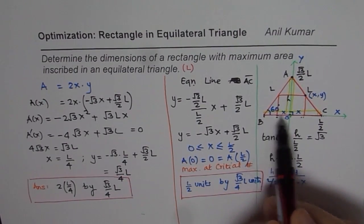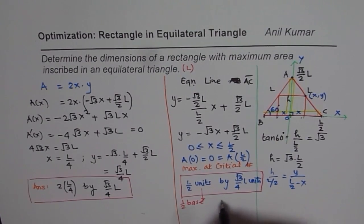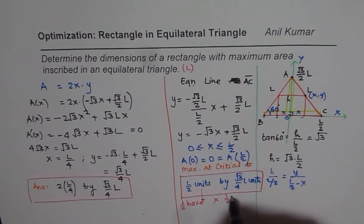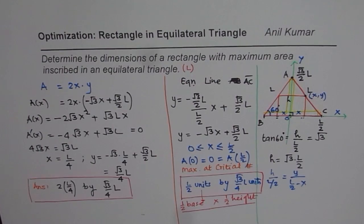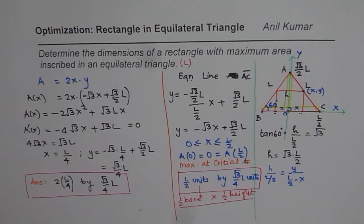You will notice that the base of the rectangle is L/2 — half the base of the triangle — and the height is (√3/4)L — half the triangle's height of (√3/2)L. In general, for almost all problems relating a rectangle inscribed in a triangle, you will always get this kind of answer: half the base times half the height. This is true for most cases, so remember that — it will make objective and multiple choice questions much easier. I hope that helps. Thank you and all the best.